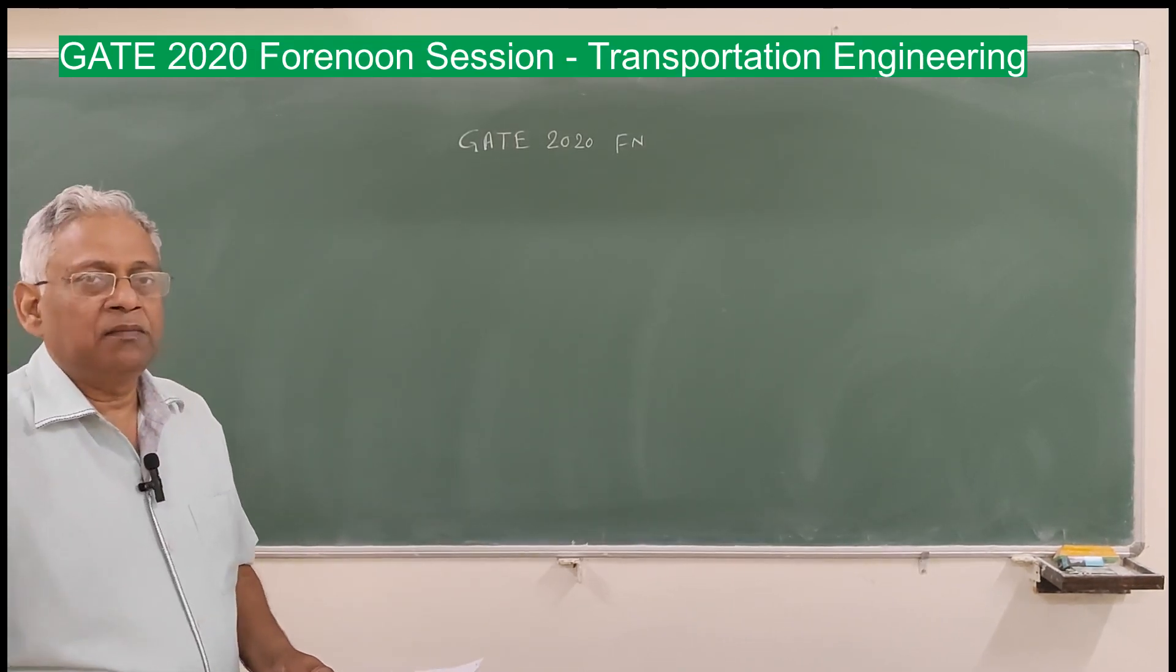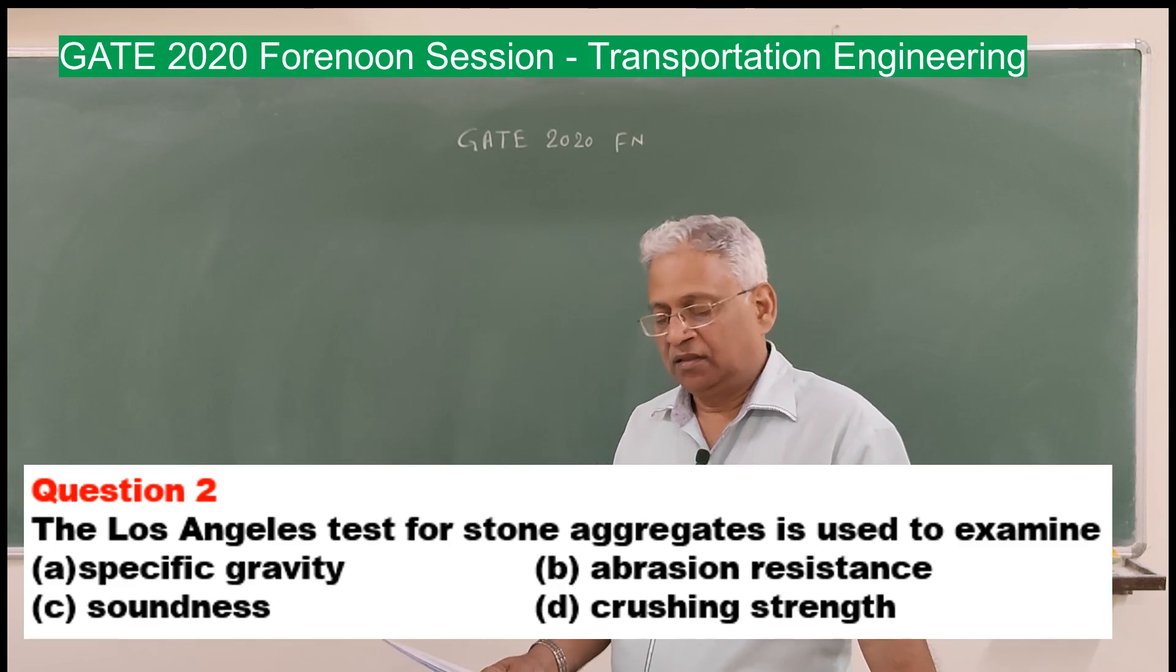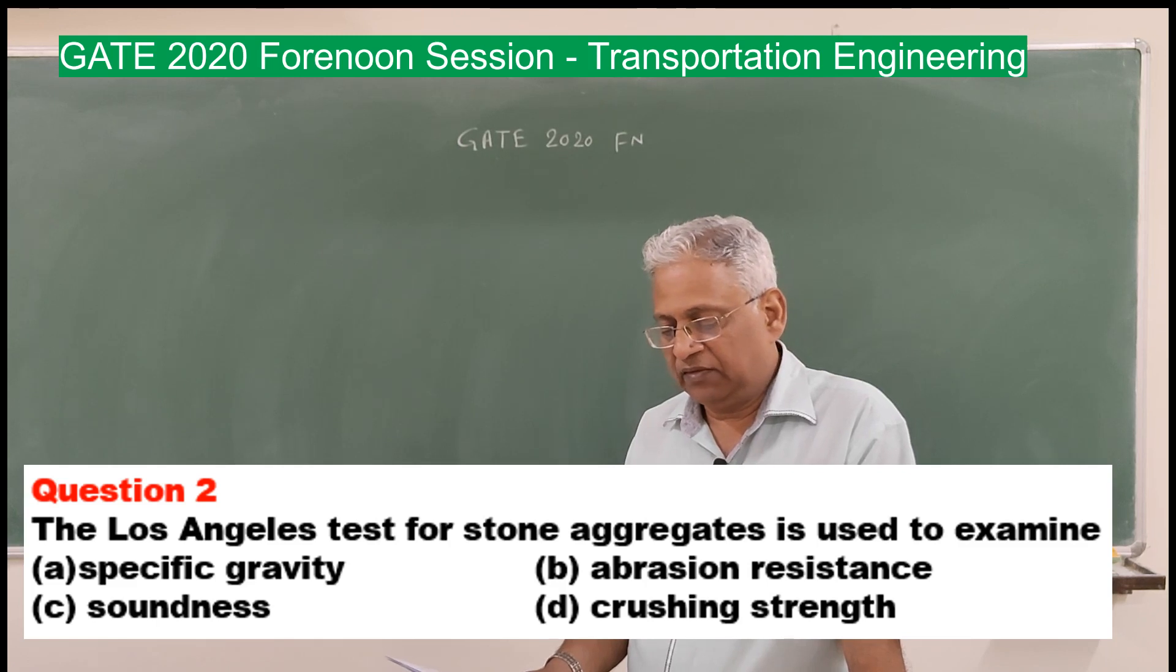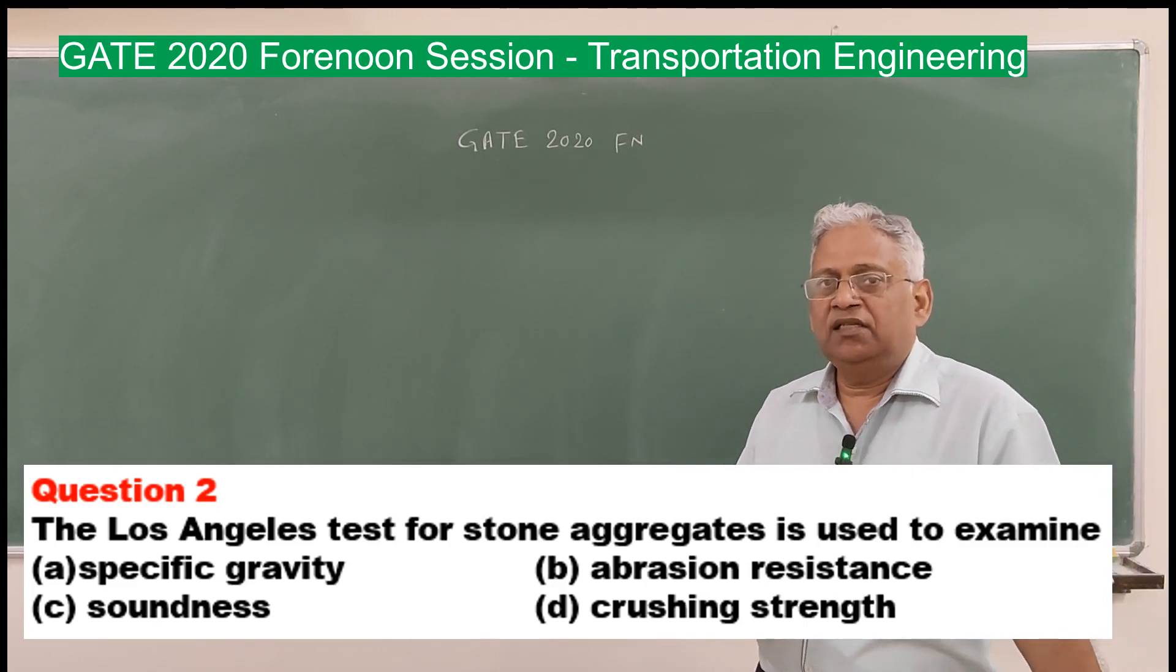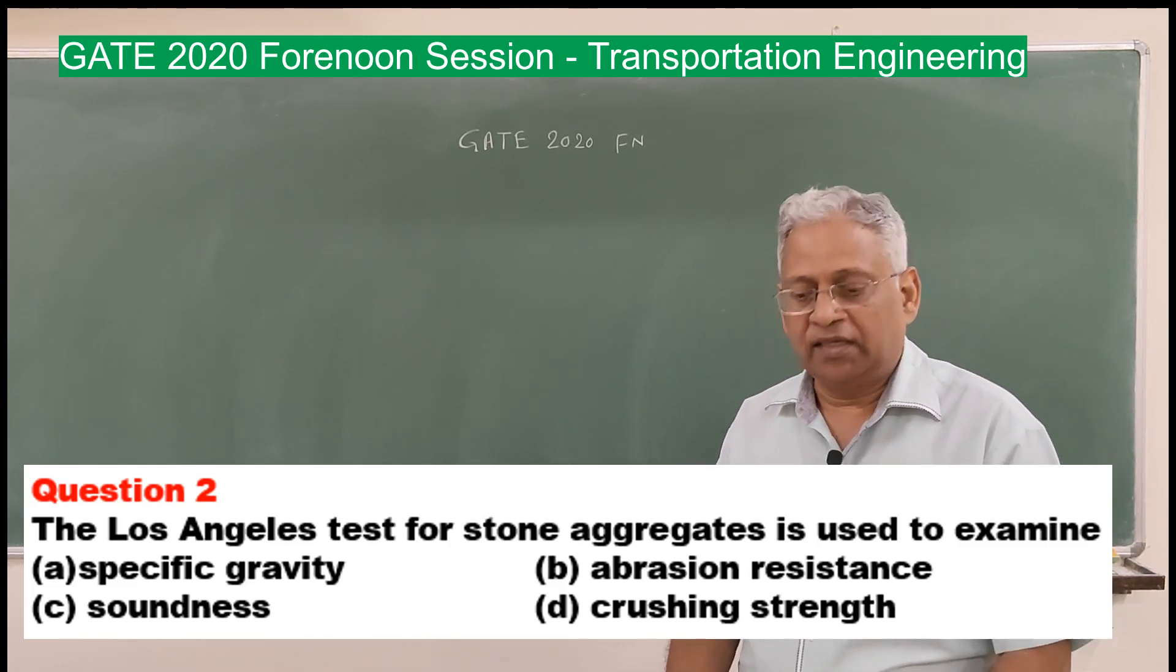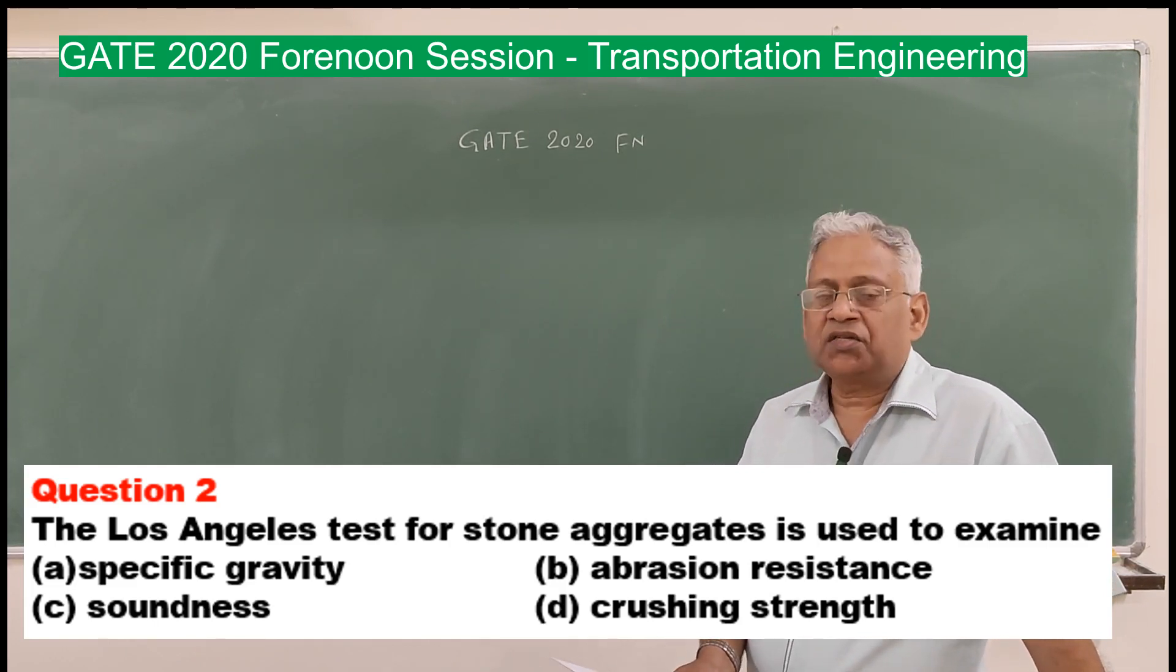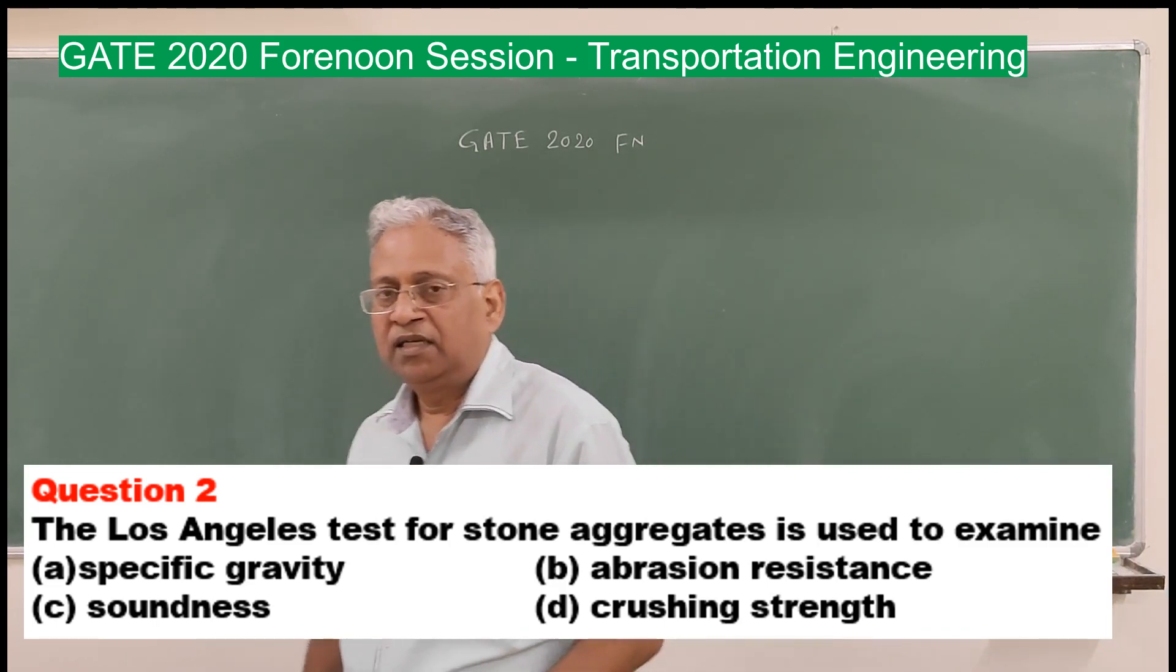Second question is very simple and straightforward. It says the Los Angeles test for stone aggregates is used to examine: specific gravity, abrasion resistance, soundness, and crushing strength. The complete name of this test is Los Angeles abrasion test and therefore it basically determines the abrasion value or hardness of the aggregate. Specific gravity does not require any test apparatus. Soundness is the resistance against weathering action. Crushing is to determine the strength of the aggregate. The correct answer is B, that is abrasion.